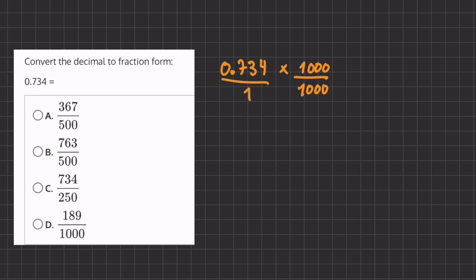Okay, so if we multiply 0.734 by 1000, we'll just get 734 and our denominator of 1000. Now we have our fraction, but we just need to simplify. So we'll divide the numerator and denominator by 2 because they're both even numbers.